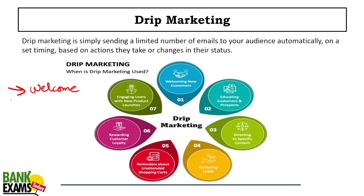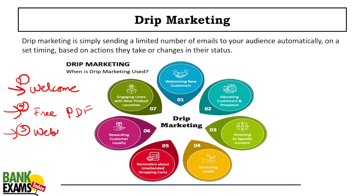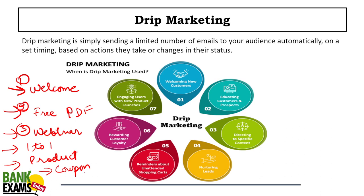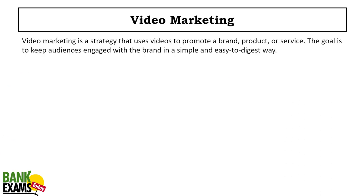Drip marketing: you write a series of automated emails sent on a set timing based on actions. For example: first email is a welcome, second email gives a free PDF, third offers a free webinar, fourth offers a one-to-one interaction, then you promote the product, and if they don't buy, you give them a coupon. That sequence is drip marketing.